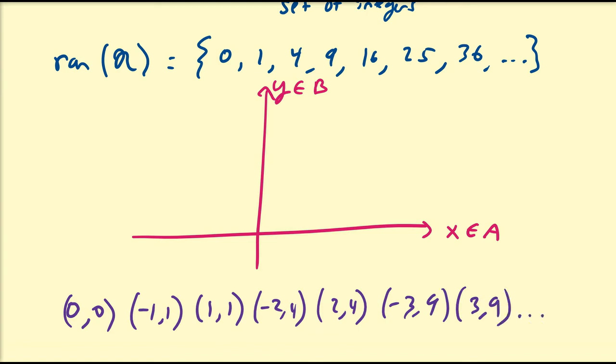So if we plot these points: 0, 0 is going to be here, negative 1, 1 is going to be here, 1, 1 is going to be here, negative 2, 4 is going to be somewhere up here, 2, 4 is going to be here, and then we're going to have some more points up here.